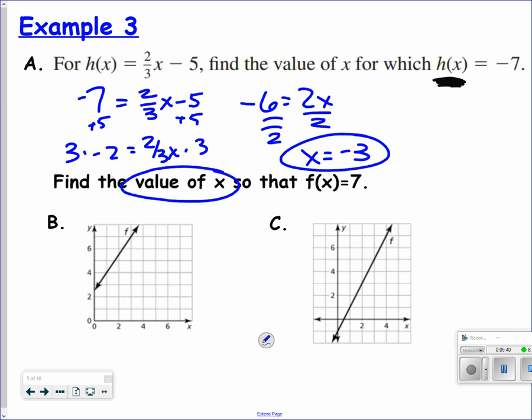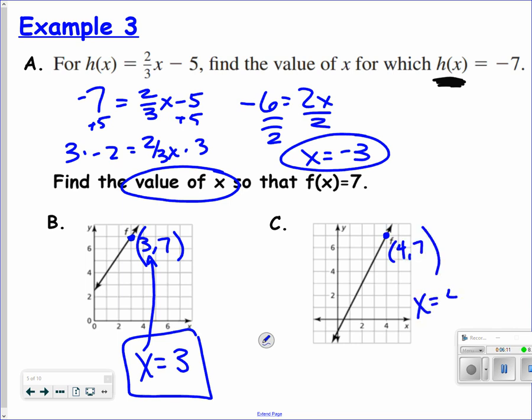So x is equal to negative 3. What that is saying is if you put negative 3 in for x, you will get negative 7. Find the value of x. So if I was looking at this from an xy chart purpose, I want the x value when the f of x is 7. I'm looking here, this is the point 3, 7. So what is the value of x when f of x is 7? The value of x would equal 3. In the next one, I have the point 4, 7. So when x is 4, the f of x is 7.